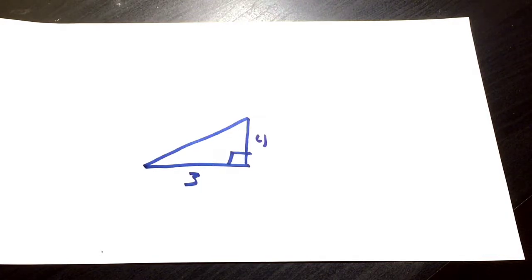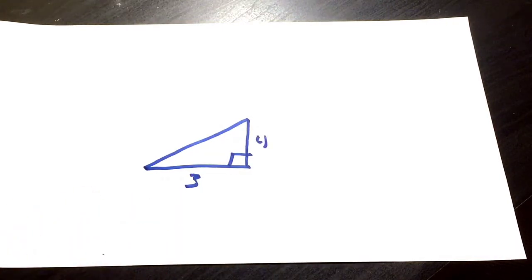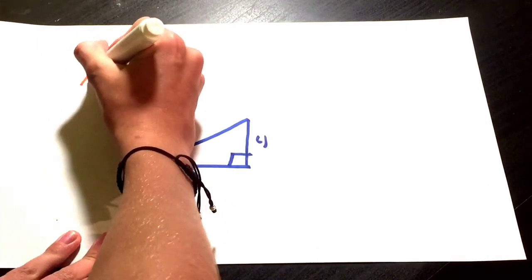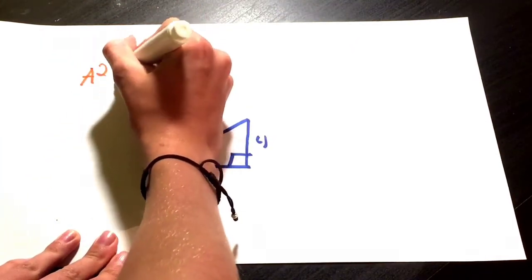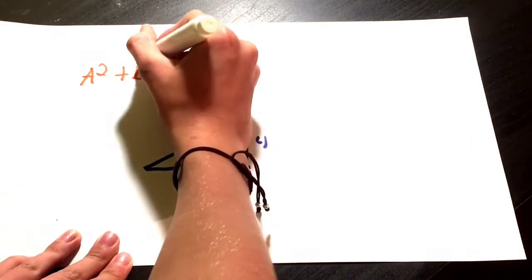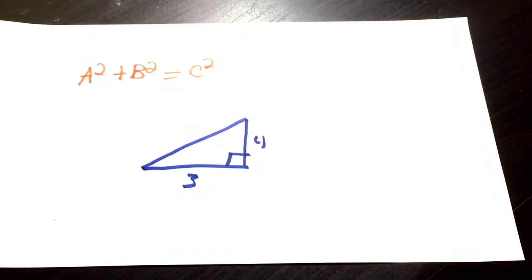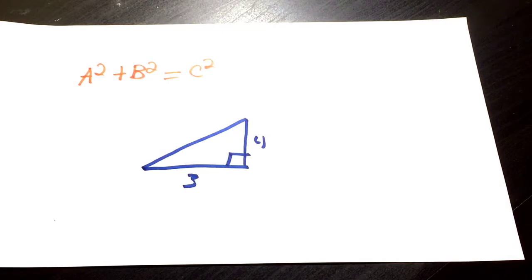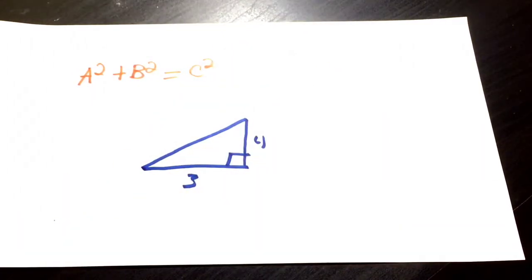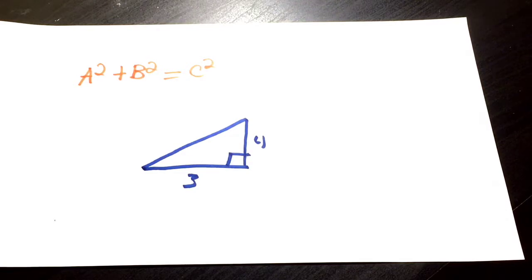First off, the Pythagorean theorem equation goes: A squared plus B squared equals C squared. That's kind of like the basic formula for the Pythagorean theorem equation. Now how does this actually work out? Like what do these letters and numbers mean? Because obviously this is very complicated—no not really, I'm just saying that.